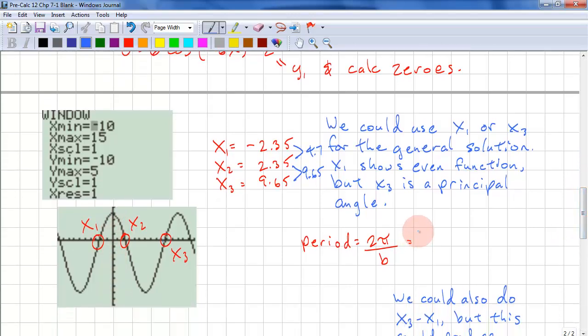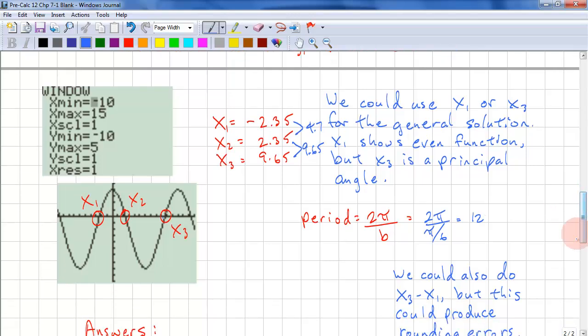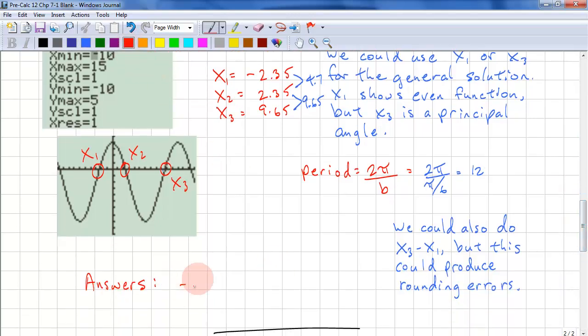Let's calculate our period. Our period is 2 pi over b, which is 2 pi over pi over 6, so that's 12. So we have answers of negative 2.35 plus 12n and 2.35 plus 12n, n being the set of integers. Just to remind you, this is period times n. Our period we calculated was 12.